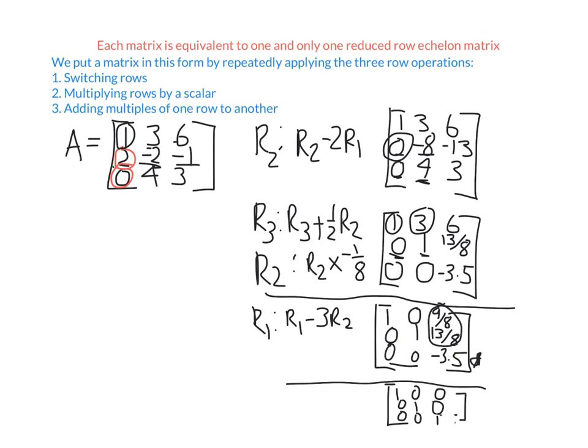Following these processes eventually gets you to reduced row echelon form. It can take a while, but it's a very important skill. This has been the luckiest maths teacher in the world — have a great day.